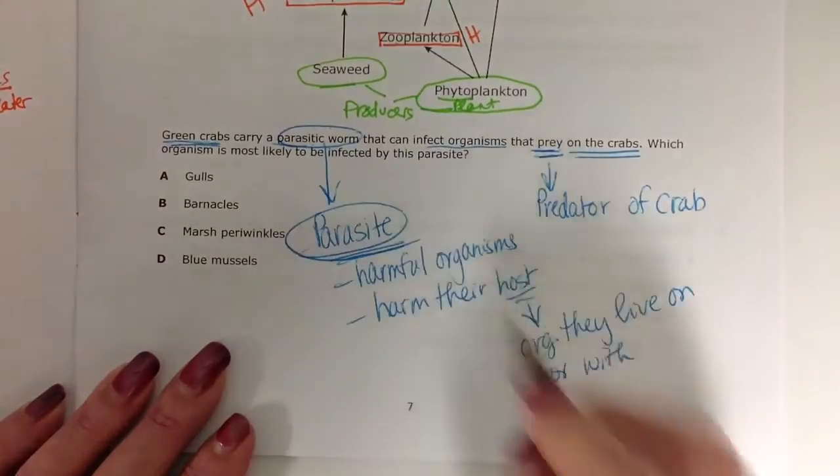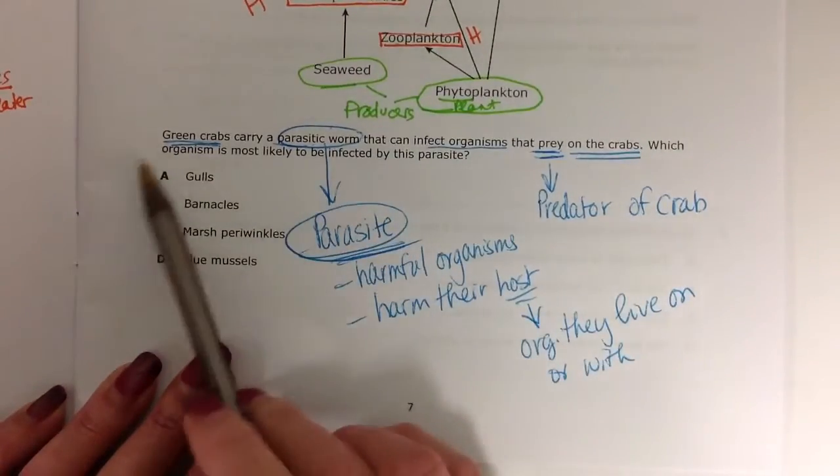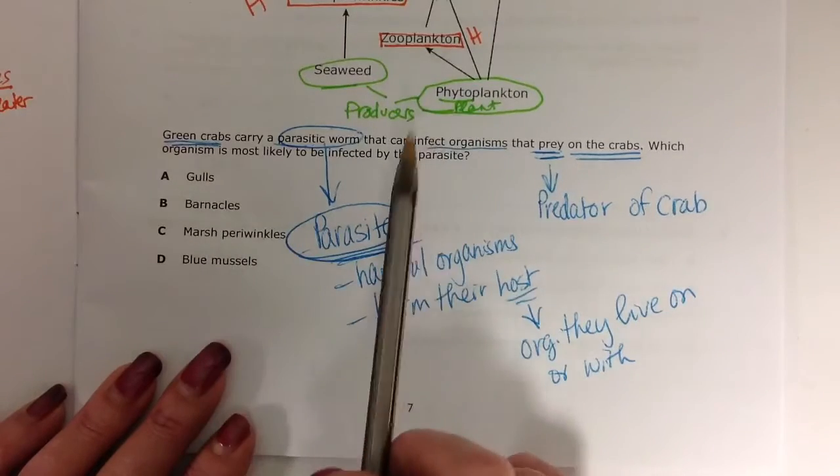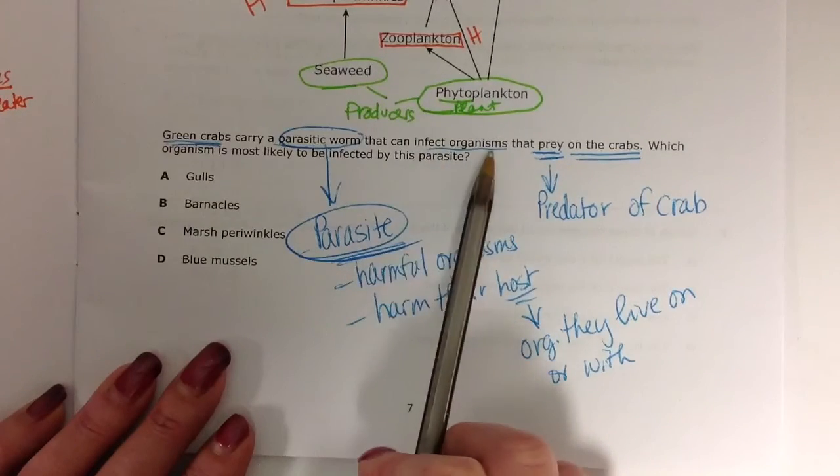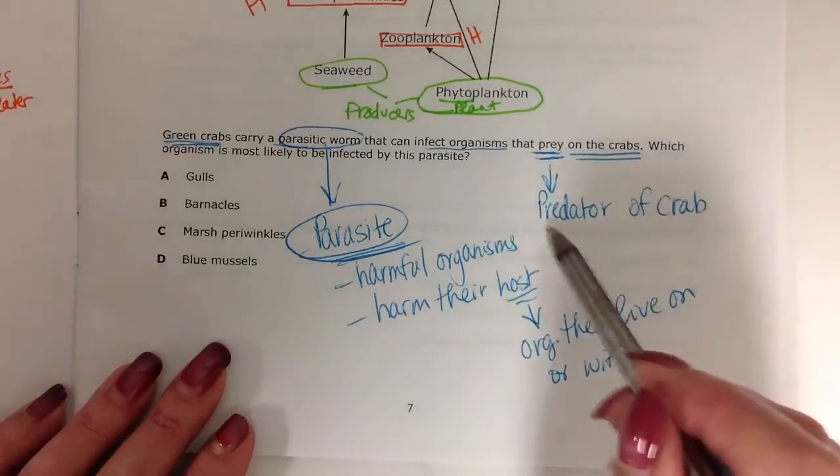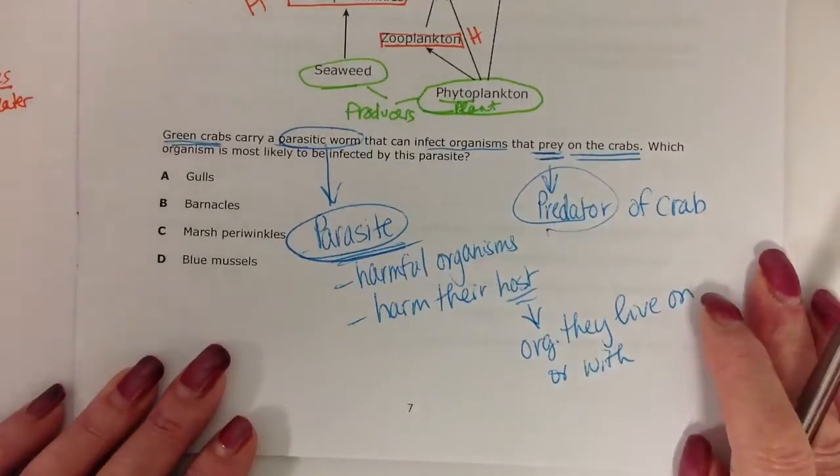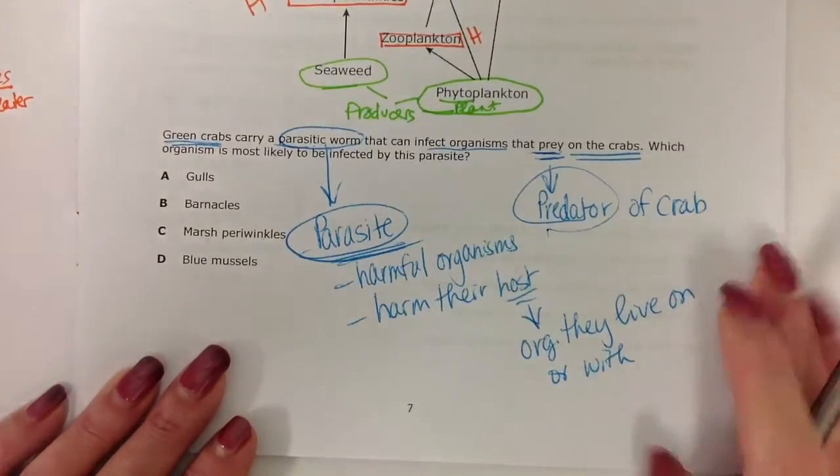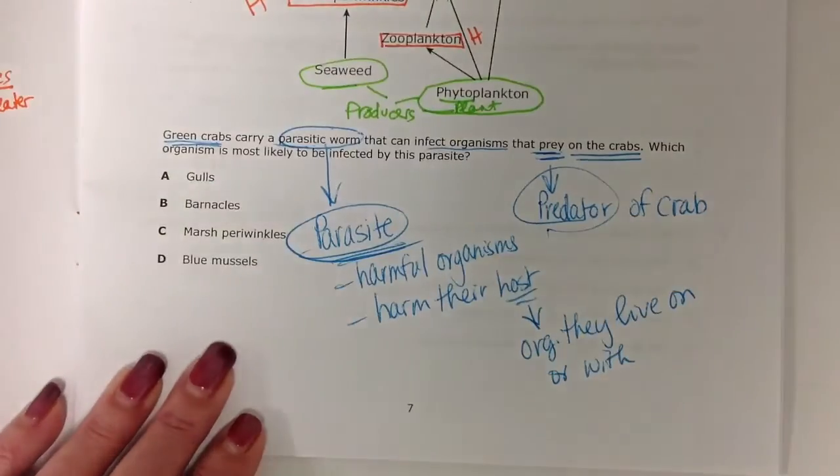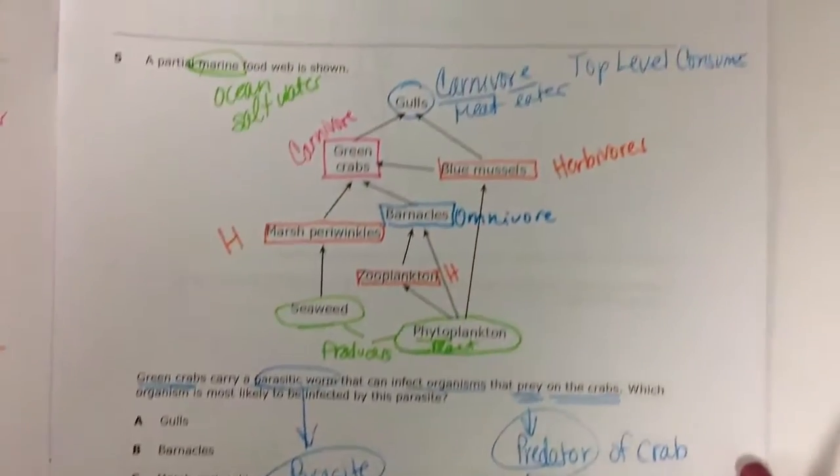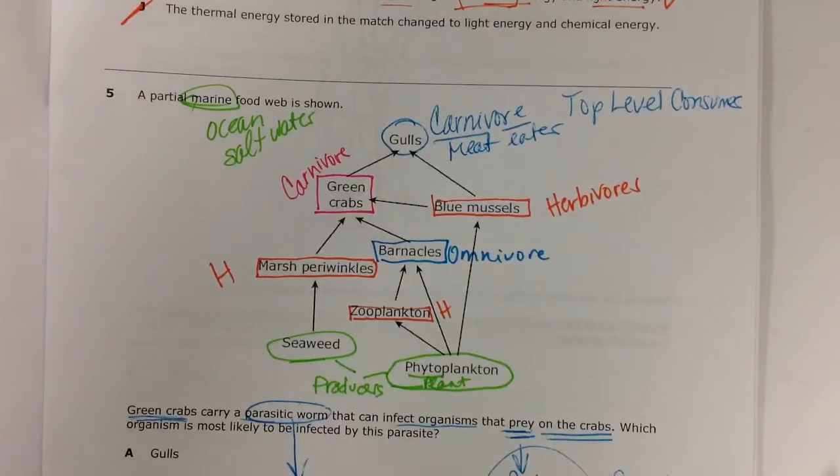So parasites are very bad. And obviously, as it suggests, the green crab has it. And it's going to affect the organisms that are predators of the crab, that prey on the crab. Meaning that the crab is the prey. So let's look at it. What organisms feed off the green crabs?